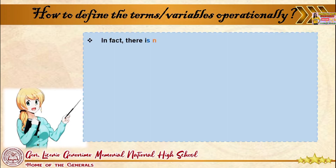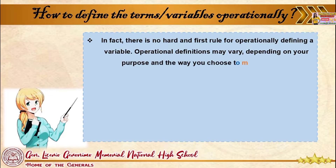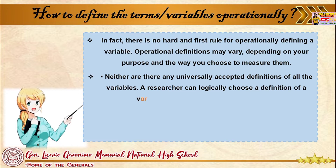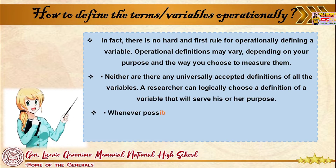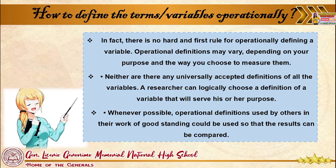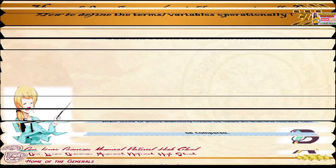How do you define a term's variables operationally? There is no hard and fast rule for operationally defining a variable. Operational definitions may vary depending on your purpose and the way you choose to measure them, and there are no universally accepted definitions of all variables. A researcher can logically choose a definition of a variable that will serve his or her purpose. Whenever possible, operational definitions used by others in good standing could be used so that results can be compared.